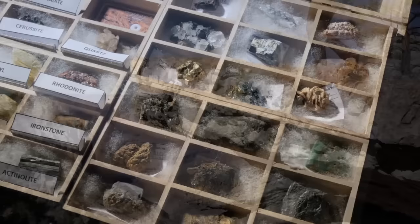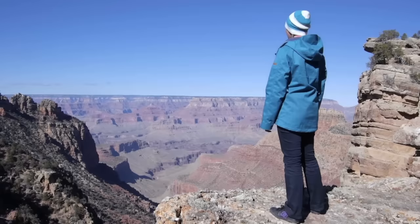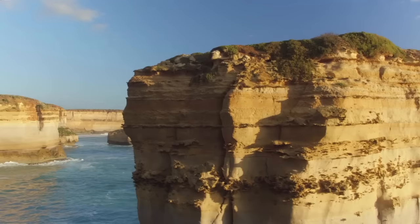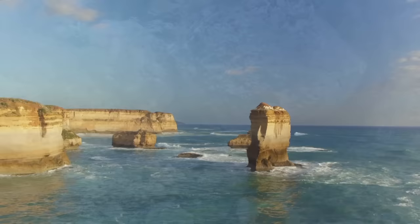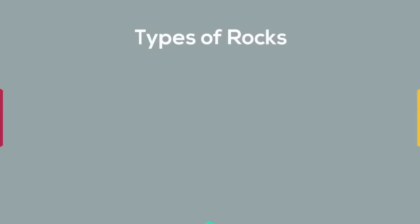A rock is a solid, naturally occurring, and is made up of minerals or mineral-like matter like shells. Rocks can be divided into three basic types depending on how they are formed. These types are igneous, sedimentary, and metamorphic.